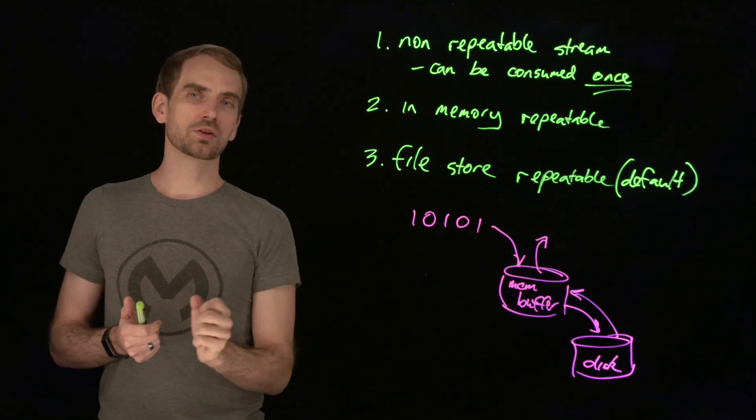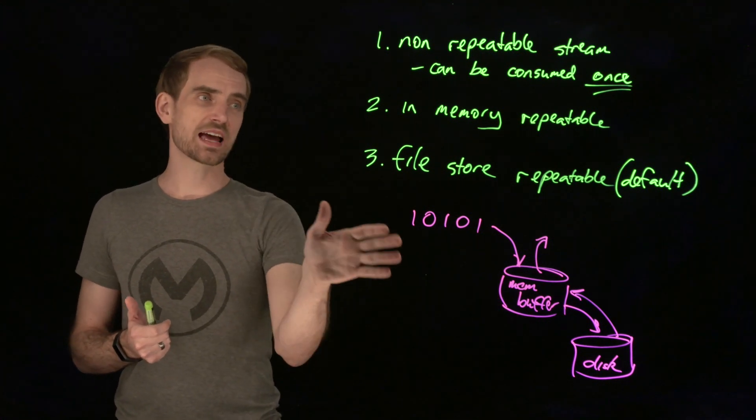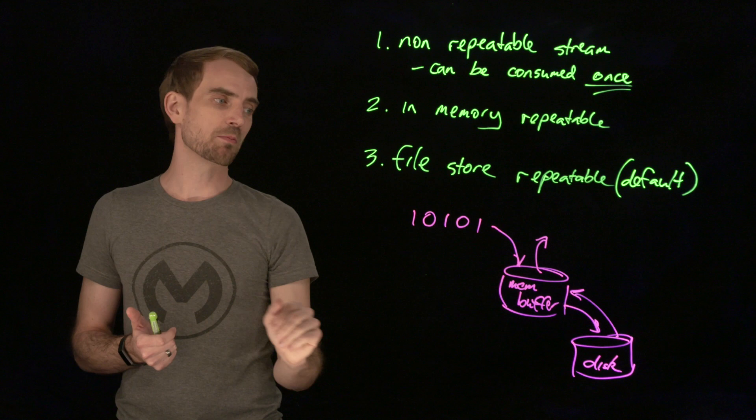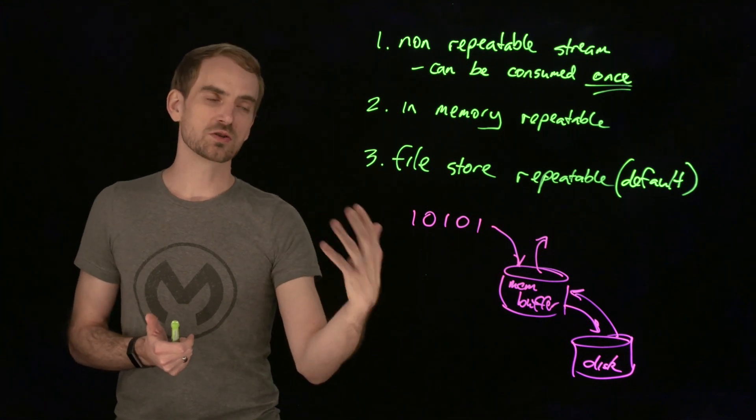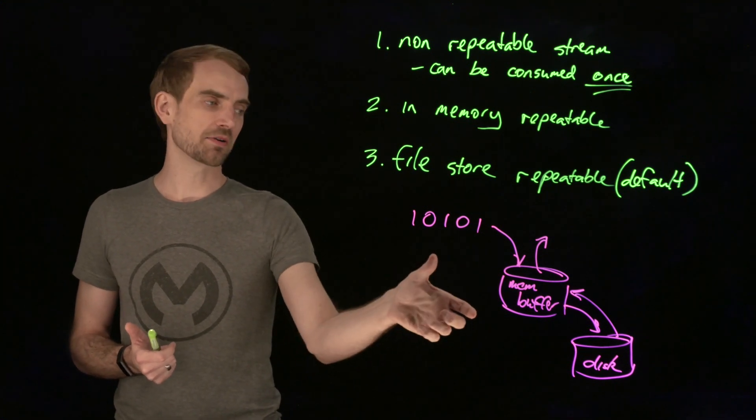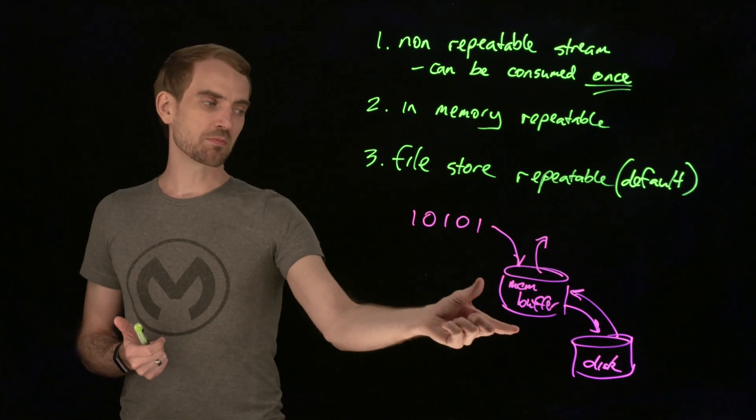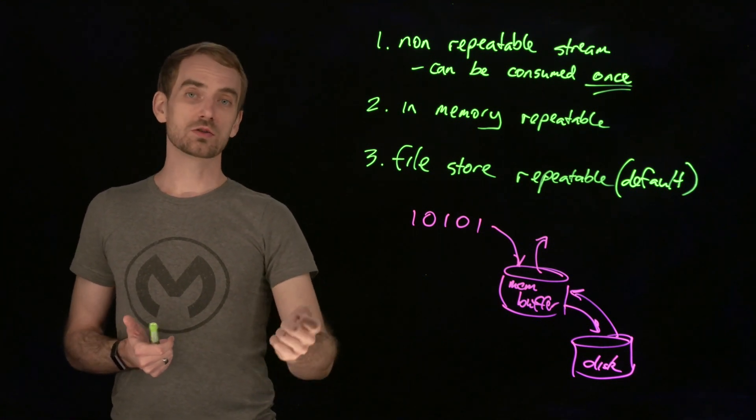So if you are below the threshold that you want to keep in memory, it behaves exactly like point two. It's in-memory, it's an in-memory buffer. You can use it as many times as you like and it comes out of that in-memory buffer. When you exceed that in-memory size, it will overflow to your disk.